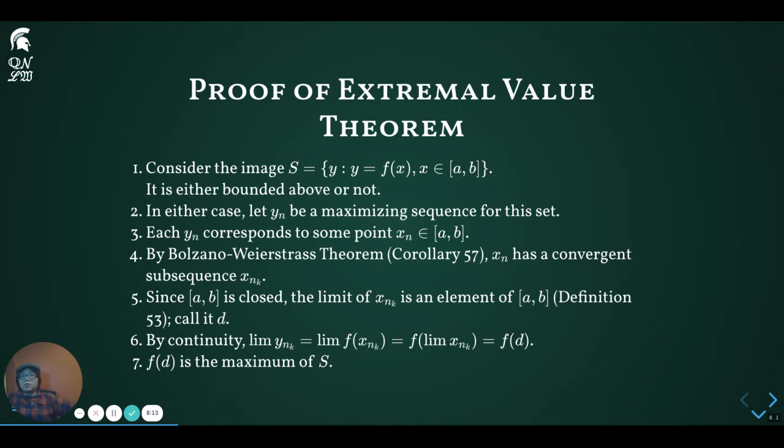Now, since the sequence x_(n_k) converges to d, and since d is in the domain [a,b], and the function f is continuous on [a,b], we know that f is continuous at d, and thus the limit of f(x_(n_k)) is equal to f(d). Since f(x_(n_k)) is the same as y_(n_k), we can also write y_(n_k) converges to f(d). And therefore, f(d) is the maximum of the set S. And remembering that S is the set of attainable values by the function f over the domain, this means that f(d) is the global maximum of the function f.